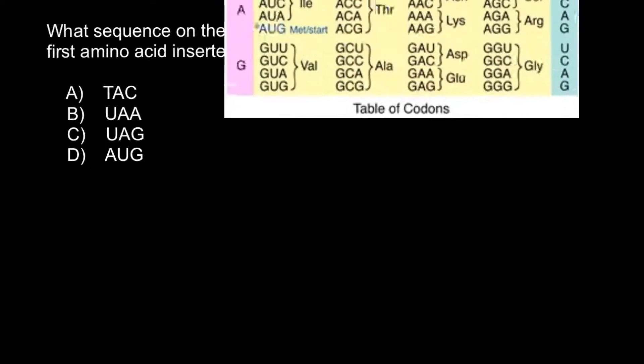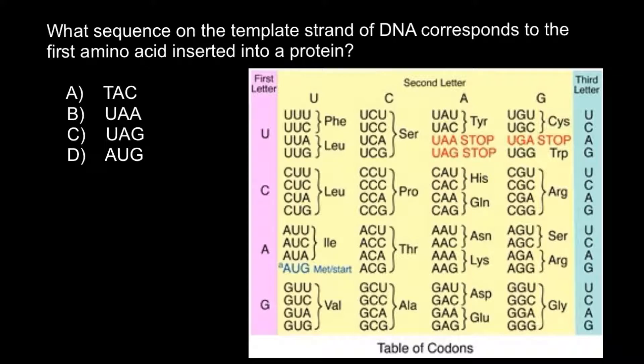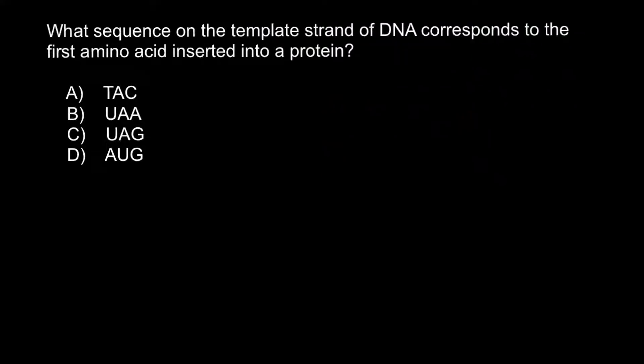This table will help us solve this problem. According to this table, the start codon AUG also codes for the amino acid methionine. So when we see the start codon on messenger RNA, this means that at this place we would have methionine.